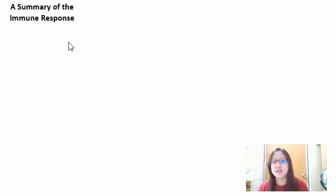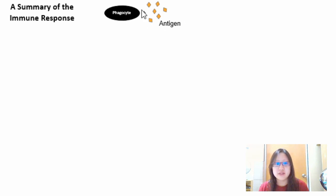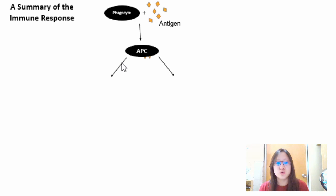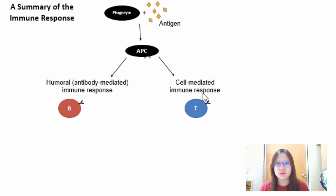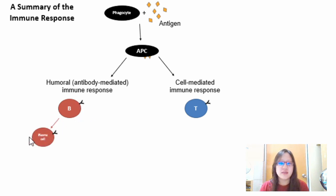Here is a summary of the immune response as expected for exam questions. The first step is always the phagocyte engulfing the antigen, producing the antigen-presenting cell (APC). The APC then presents the antigen to lymphocytes, activating either the humoral (antibody-mediated) immune response or the cell-mediated immune response. The humoral response involves B cells developing into plasma cells, which produce antibodies, and memory B cells for long-term immunity.